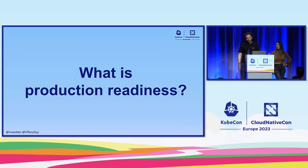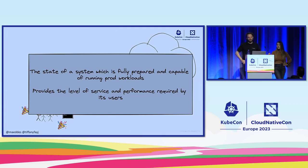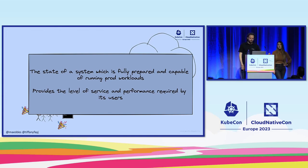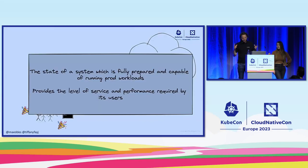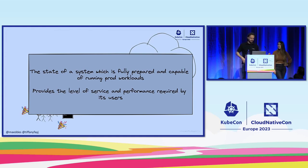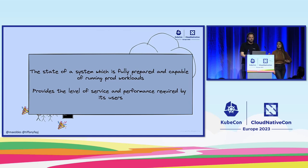That brings us to the point: what is actually production readiness? There's no official definition, but if we try to summarize it at a high level, it's the state of a system which is fully prepared and capable of running production workloads and provides the level of service and performance required by its users. This definition isn't bound to just what Kubernetes does — it's way more than that — but since this is KubeCon, we certainly want to focus on cloud-native and CNCF-based technologies.